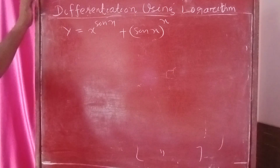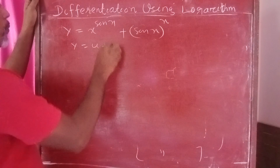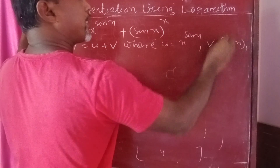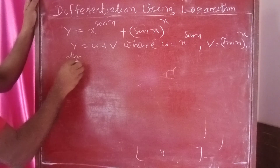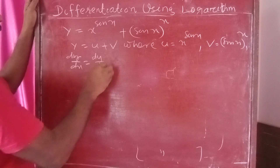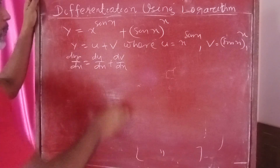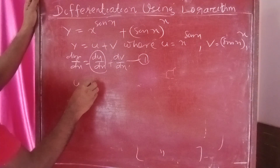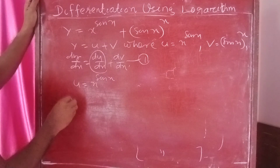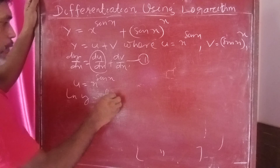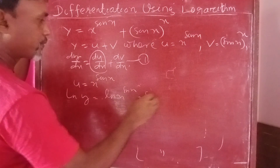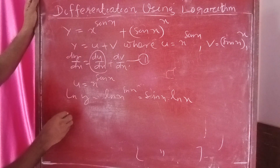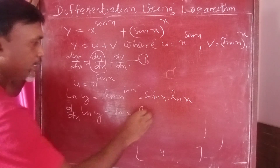Let y equal x to the power sin x plus sin x to the power x. Suppose y equals u plus v, where u equals x to the power sin x and v equals sin x to the power x. Then dy/dx equals du/dx plus dv/dx. First, find du/dx: since u equals x to the power sin x, taking log gives log u equals sin x into log x.